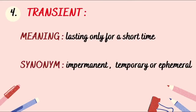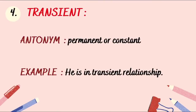The next vocabulary is 'transient.' Transient means lasting only for a short time. When something or someone lasts or remains for a short period of time, it is transient. Its synonym is 'impermanent,' 'temporary,' or 'ephemeral.' Its antonym is 'permanent' or 'constant.'